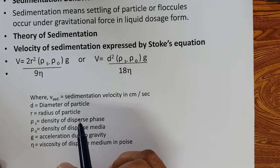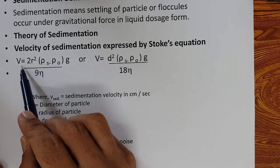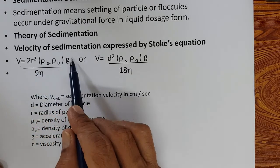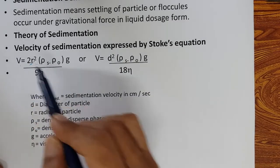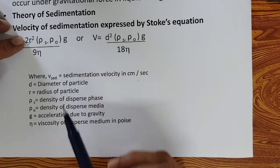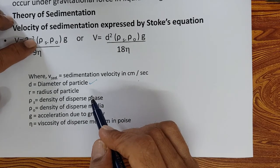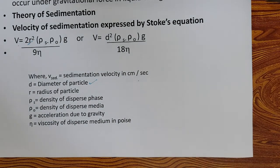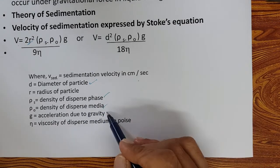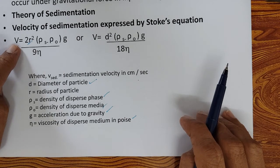Theories of sedimentation: the sedimentation velocity V = 2r²(ρs − ρ₀)g / 9η, where r is radius, ρs is the density of the dispersed phase, ρ₀ is the density of the medium, g is acceleration due to gravity, and η is viscosity. Sedimentation velocity increases if the diameter increases — that is why particle size has to be small. The density difference between the dispersed phase and the dispersion medium should be as narrow as possible. If viscosity is more, sedimentation velocity is less.